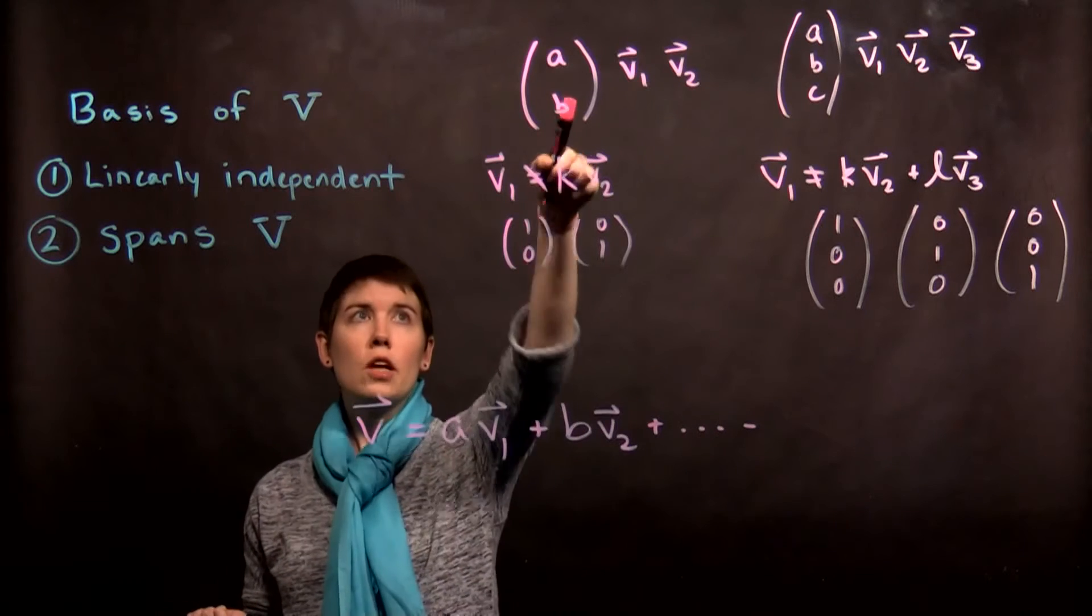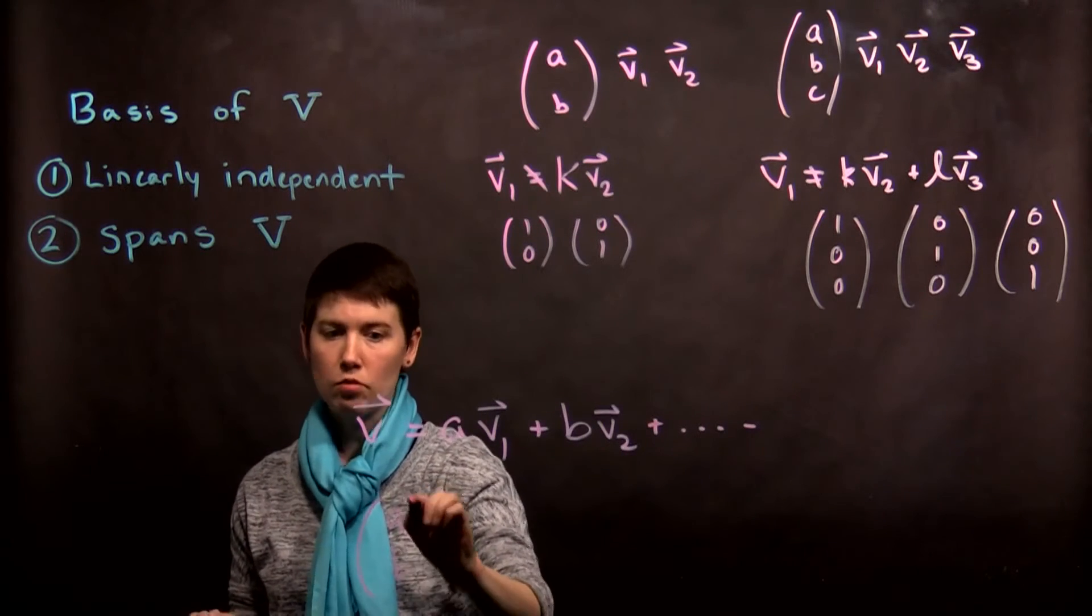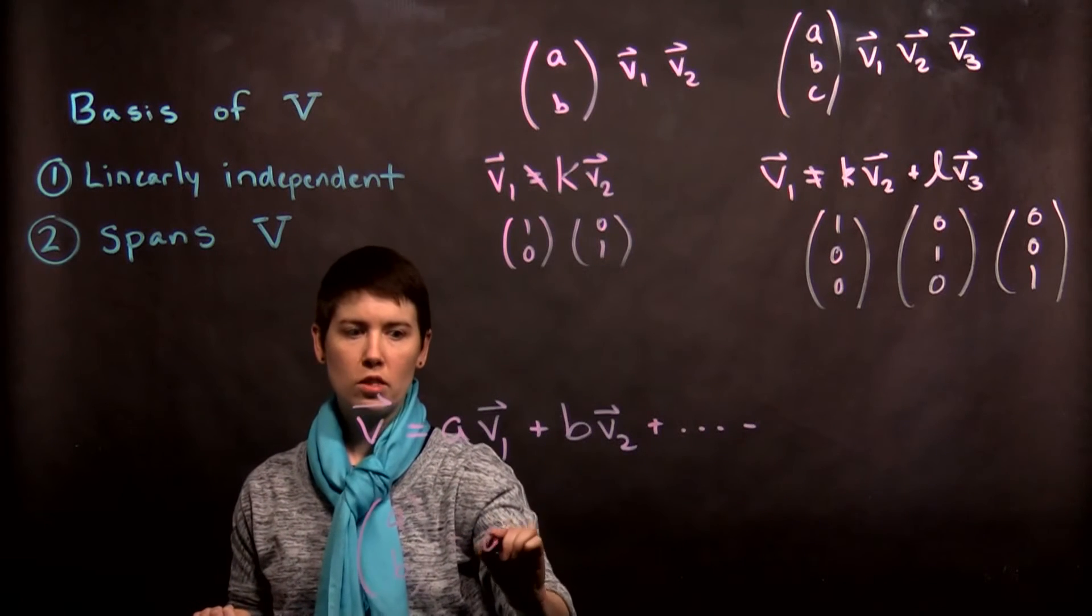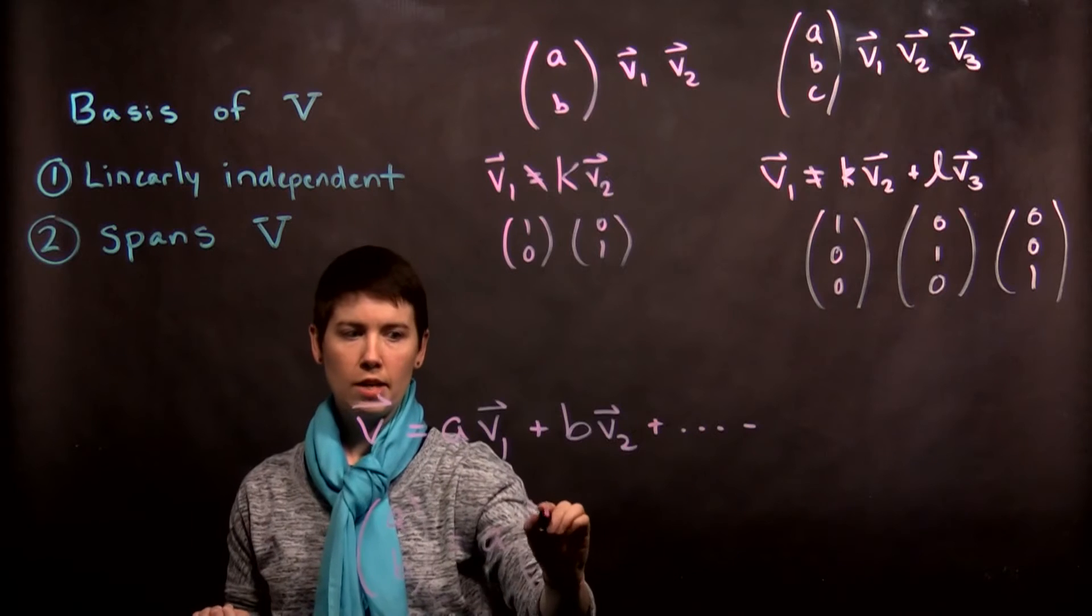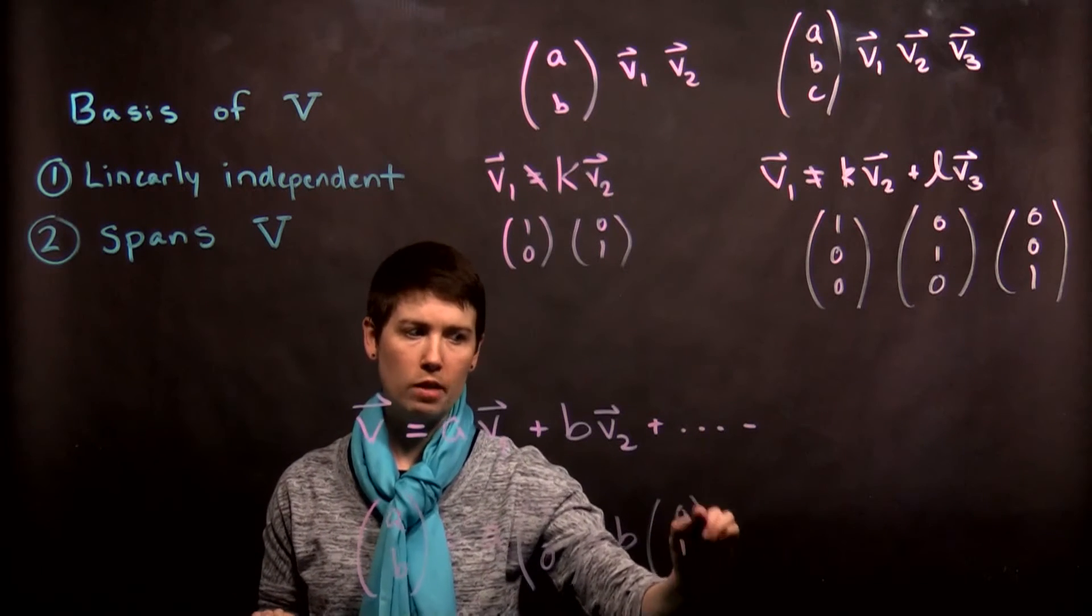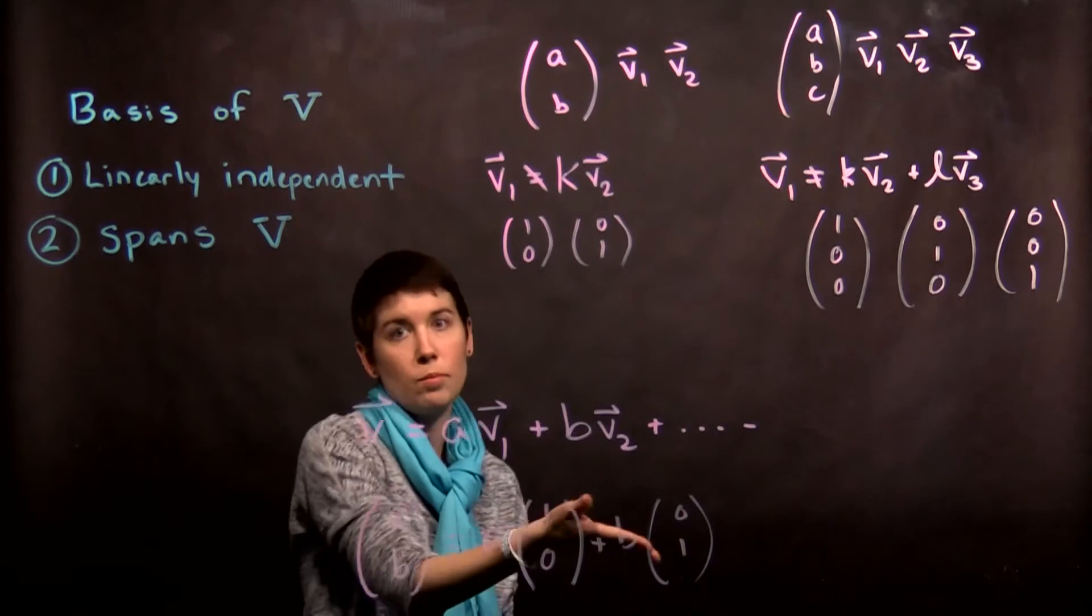If we look at this first case here, if I have a general vector that's two elements, then obviously this is going to just be variable a times (1,0) plus variable b times (0,1). So anything that has two entries like this can be made out of a sum of these two.